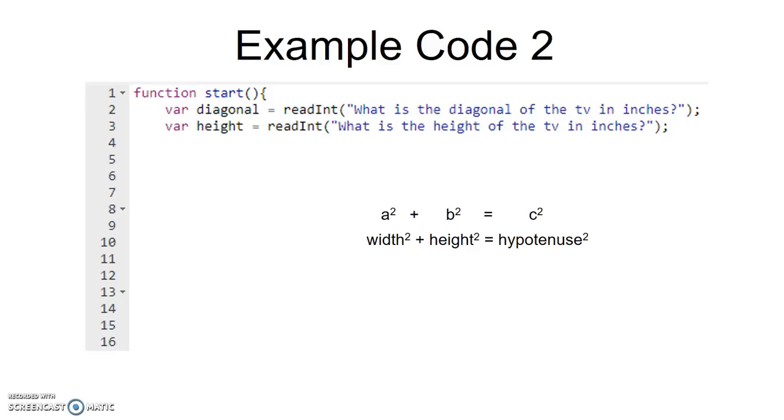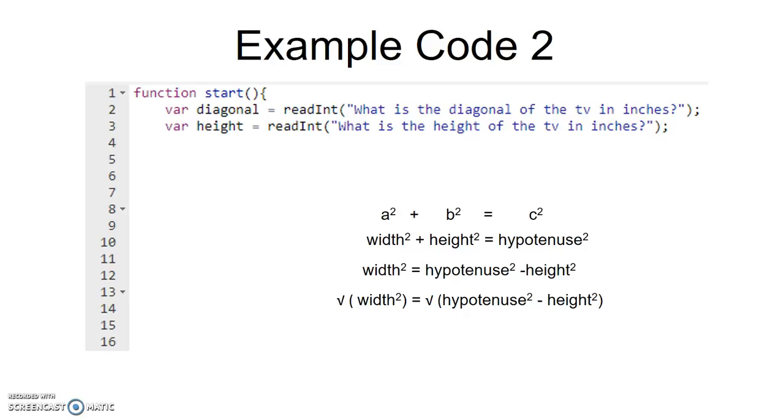Now instead of solving for the hypotenuse here, we want to solve for the width. So we're going to subtract the height from both sides and do the same thing that we did before where we square root both sides.